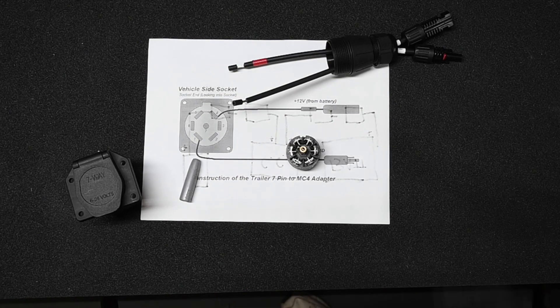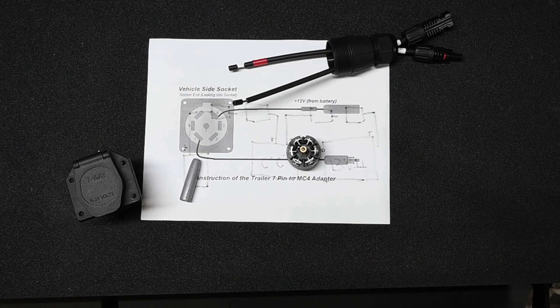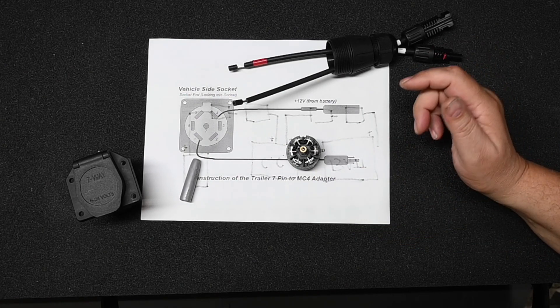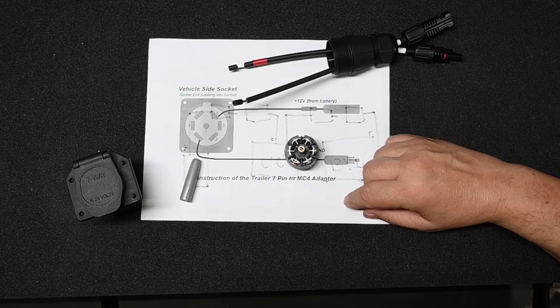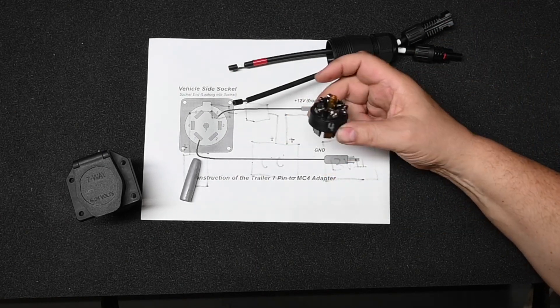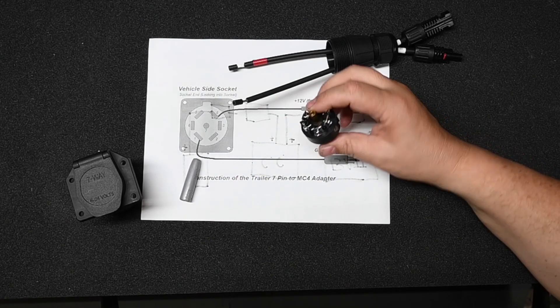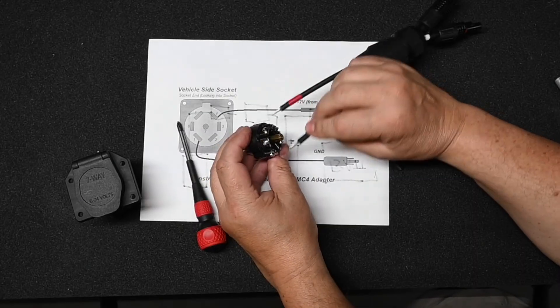Now one caveat is that there are different standards. There's an RV standard and an SAE standard. The color code and the pin numbers are different between the two. And I did cover that at length in another video, which I'll post here. And if you buy a different connector than the one I specify, it may have that different configuration. So if you're not sure what you're doing, I would recommend buying this connector.